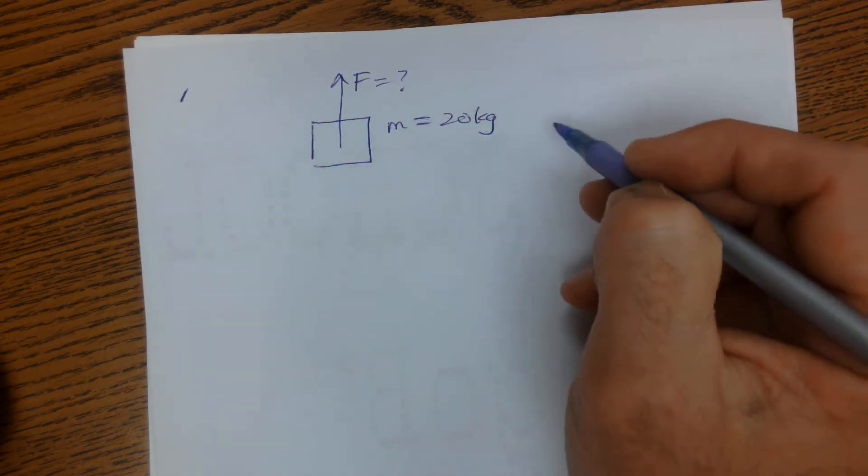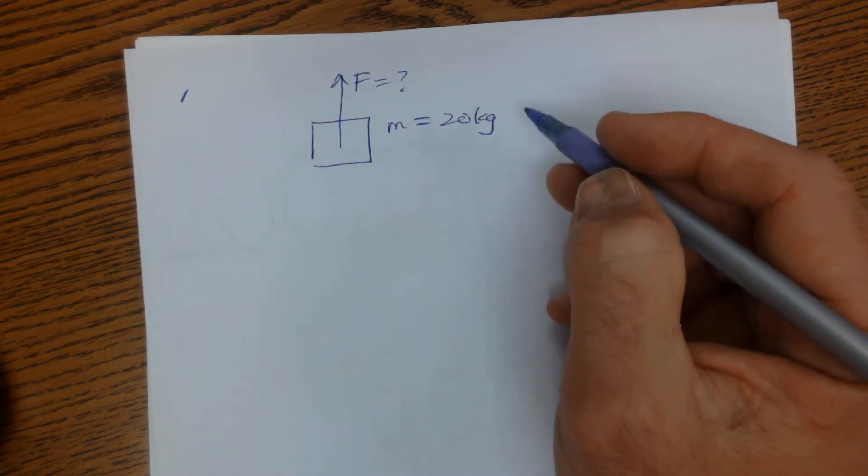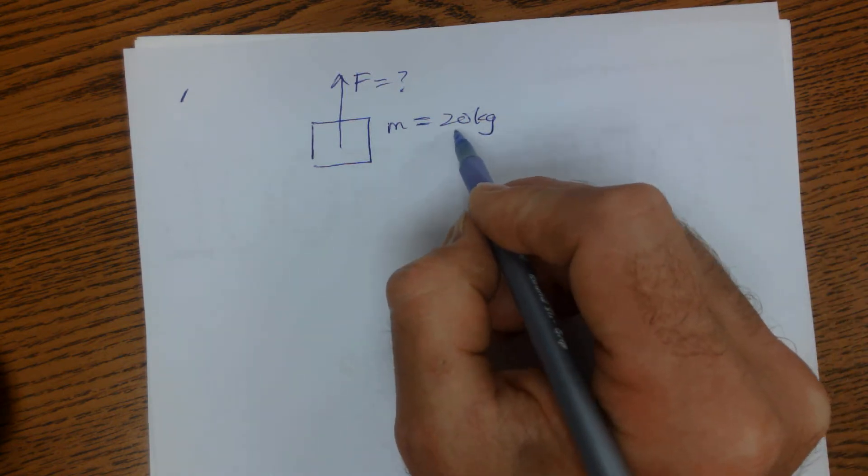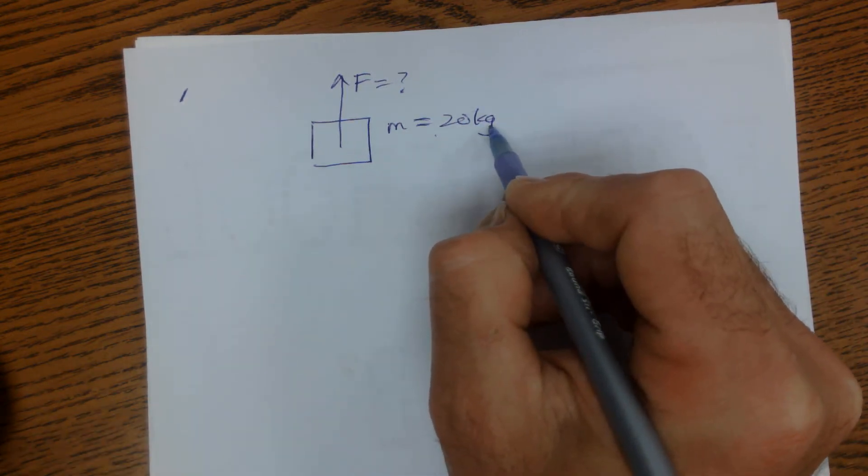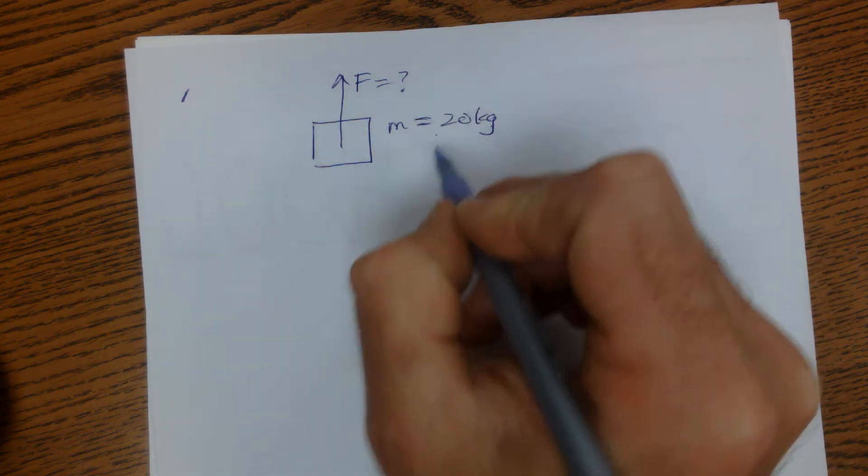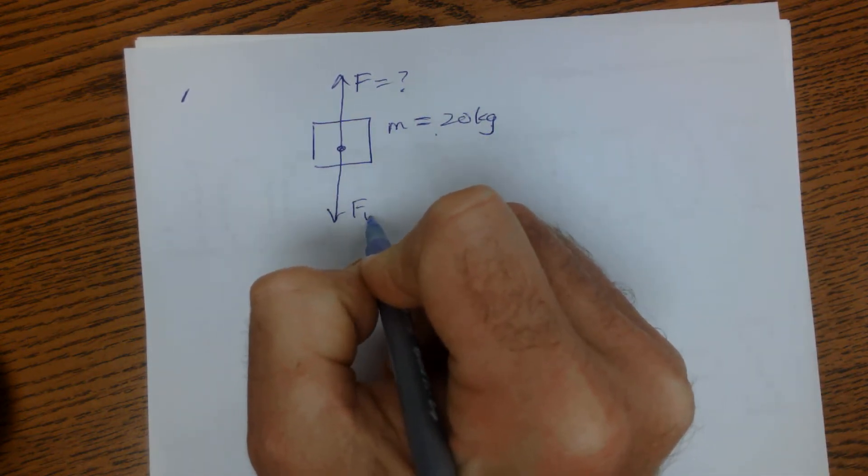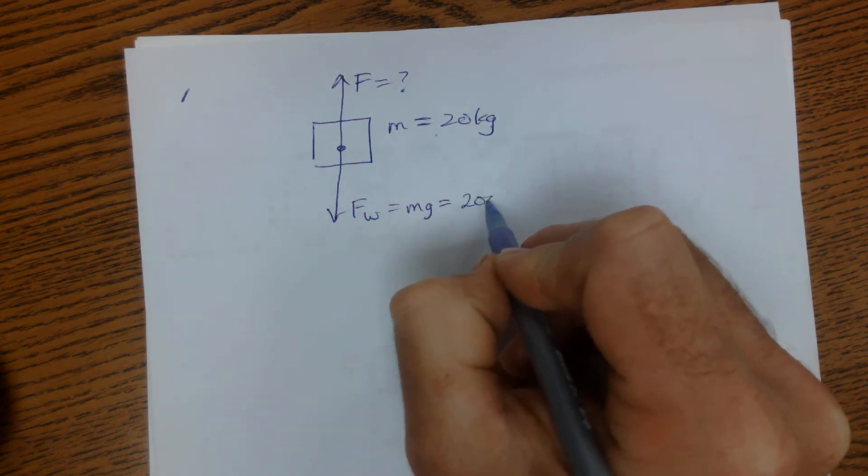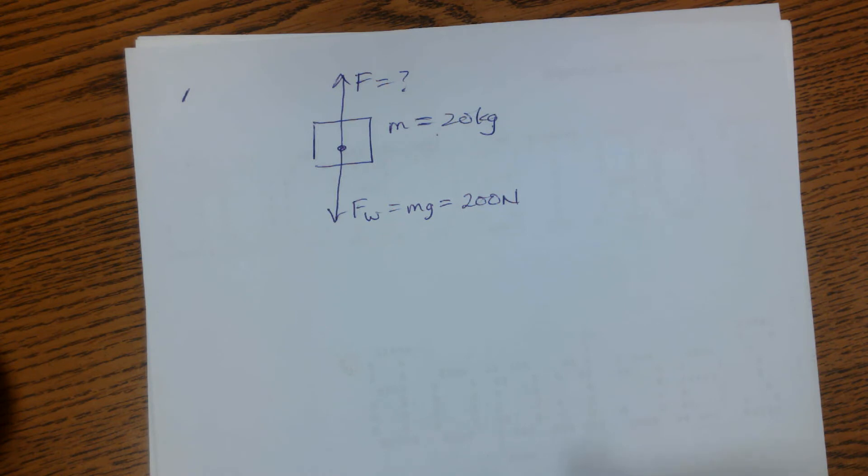I'm going to let you guys get away with using gravity as 10 meters per second squared. So simply mass times 10 meters per second squared, you're going to get that that's a force of weight downwards of mass times gravity, which is going to be 200 newtons.